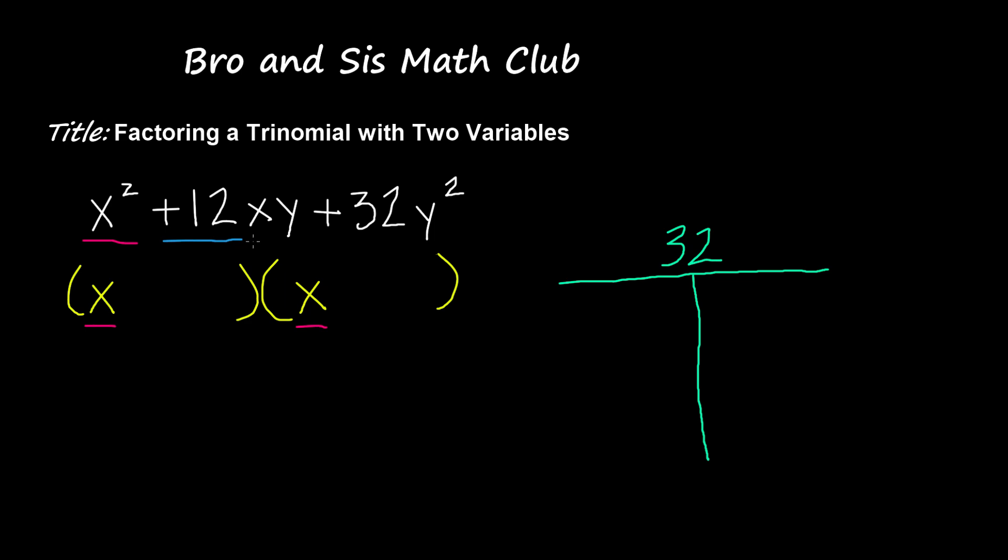So we have to find two factor pairs that when added up give us 12 and when multiplied give us 32. So let's go ahead and list the factor pairs of 32. So we have 32 and 1.